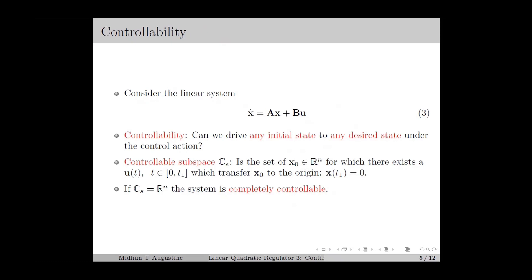For example, in the case of a second-order single-input system, we only have one input, but there are two state variables. The controllability addresses whether we can control both states to any desired value using the control input. There are different definitions of controllability, and usually in the definitions, the desired state is considered as the origin, since we can transfer any non-zero reference to 0 using a suitable coordinate transformation.